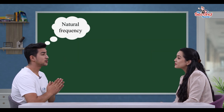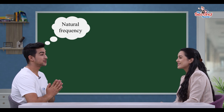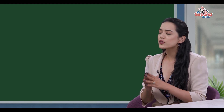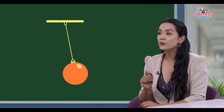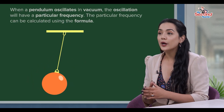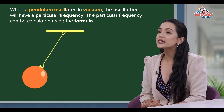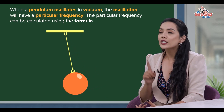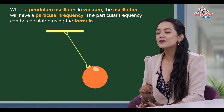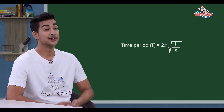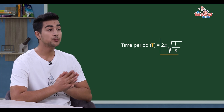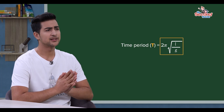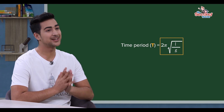For example, how can natural frequency be determined? Consider a pendulum: when the pendulum oscillates in a vacuum, it will oscillate at a particular frequency. We can calculate that frequency using the formula: time period T equals 2π times the square root of l by g. From this formula we can find the natural frequency.